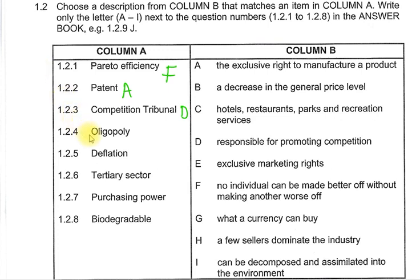Question 1.2.4: Oligopoly — what is an oligopoly as one of the market structures? The correct answer is H — a few sellers dominate the industry. For example, the likes of Vodacom, Telkom, and Cell C. Those are the sellers that dominate the market; they are very few, but they dominate.